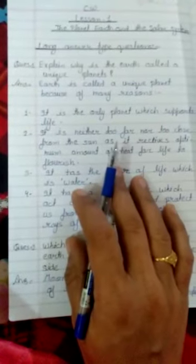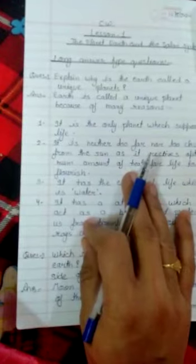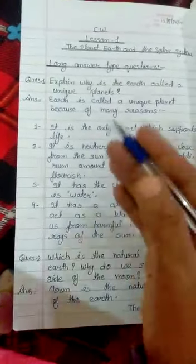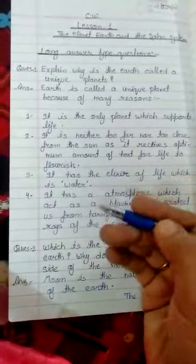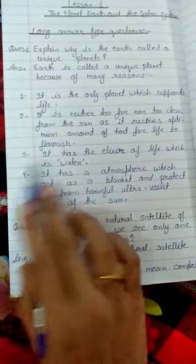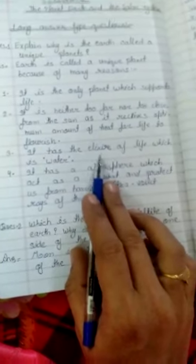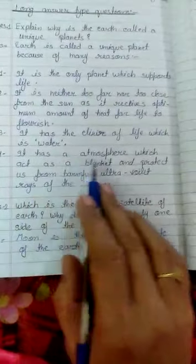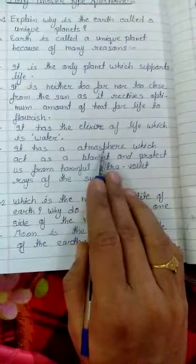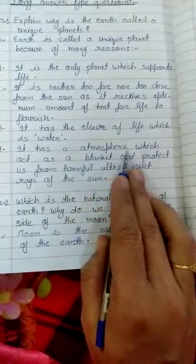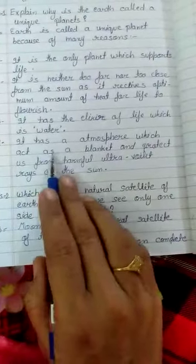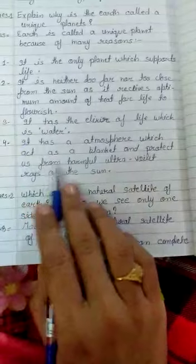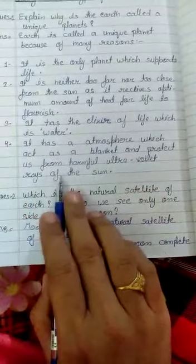One thing more, listen very carefully. Third point: It has water which is the elixir of life. Fourth point: It has an atmosphere which acts as a blanket and protects us from harmful ultraviolet rays of the sun.